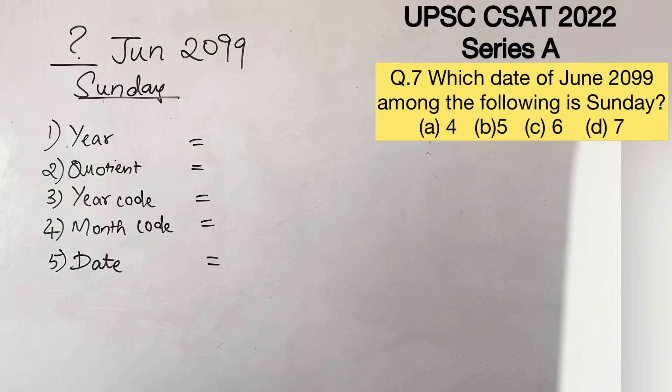Let us solve question number 7 from series A, UPSCC SAT 2022: which date of June 2099 among the following is Sunday? We will be solving this using the code method, which is a different technique. We will not be approaching this sum in the conventional way.